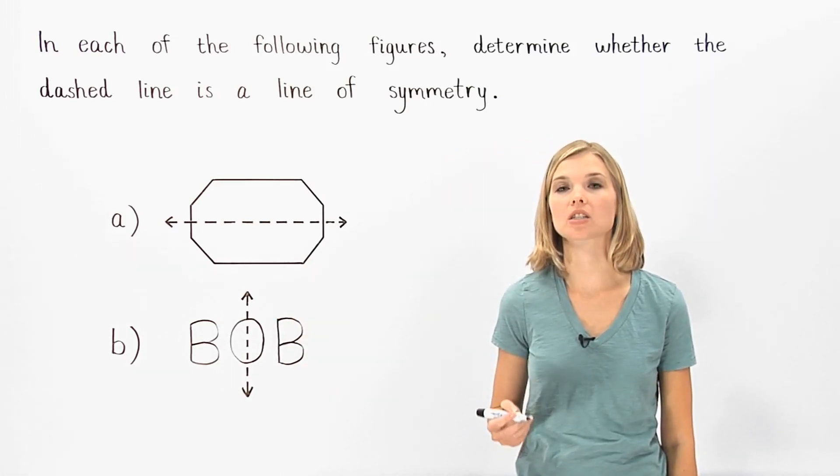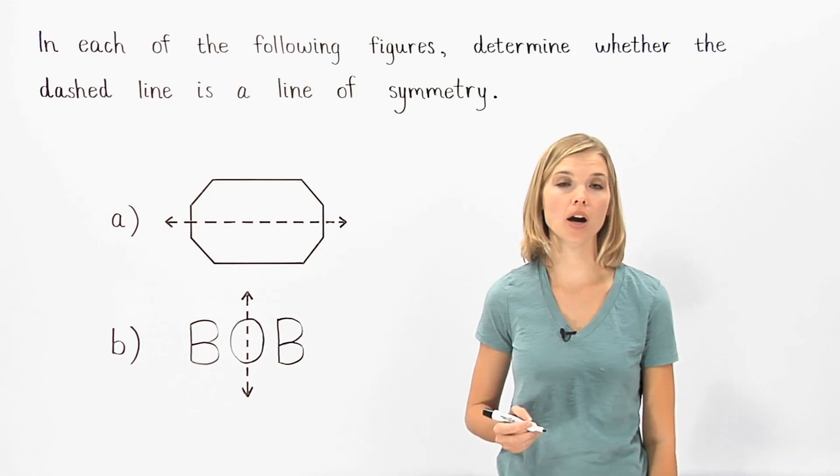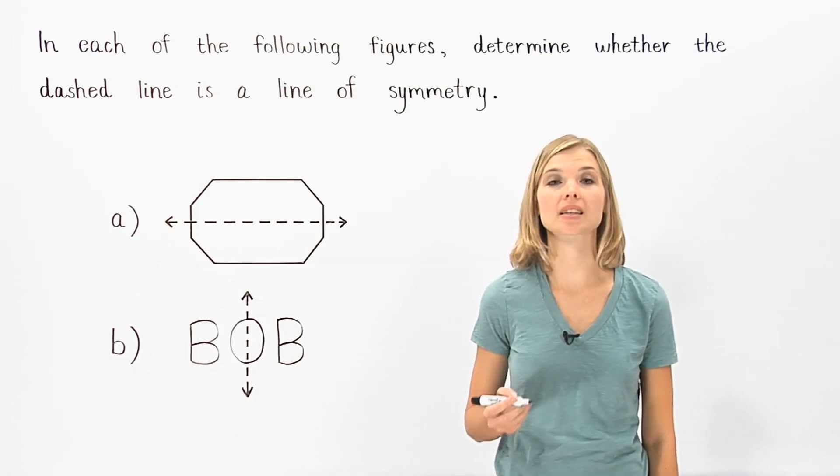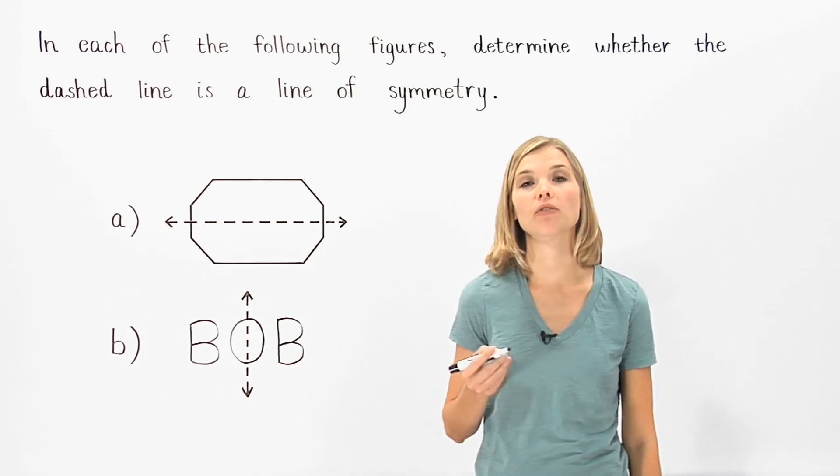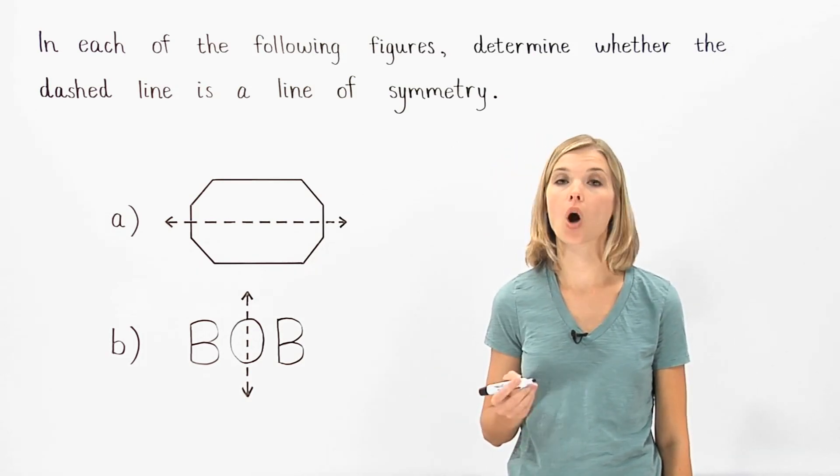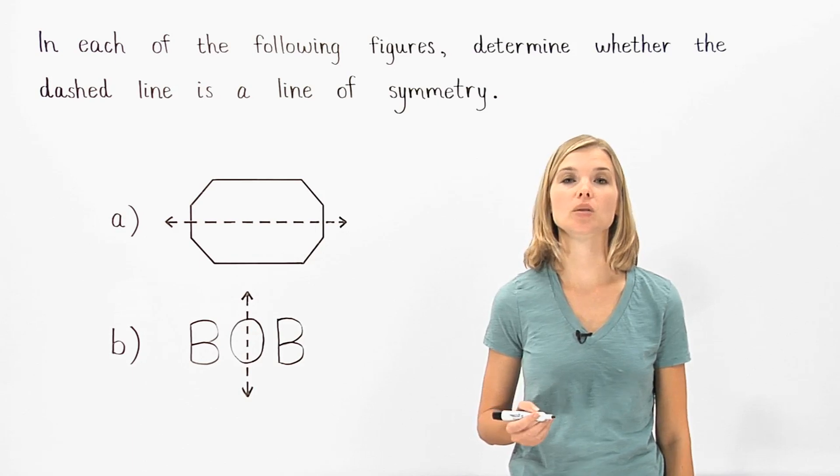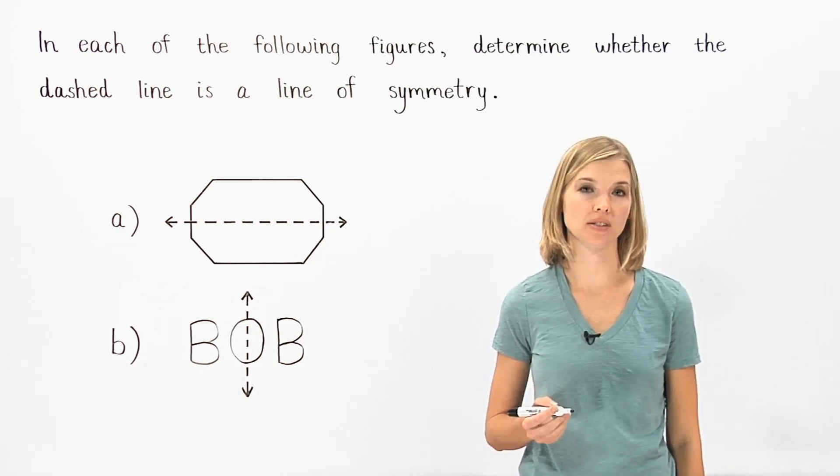A line of symmetry divides a figure into two parts such that each part is the mirror image of the other. In other words, if we flip one side of the figure over the line of symmetry, it should match up exactly with the other side.